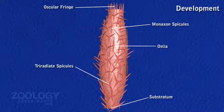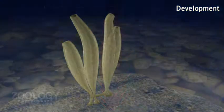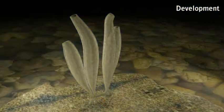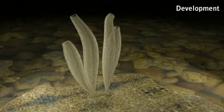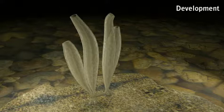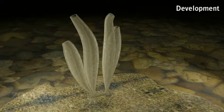The spongocoel opens to the outside by an osculum. Certain non-flagellated cells in the wall of the sponge, or porocytes, become perforated to form incurrent pores or ostia. Monoaxon and triradiate spicules are secreted by scleroblasts or modified amoeboid cells. Within a few days of attachment, the larva is converted into an adult asconoid sponge.